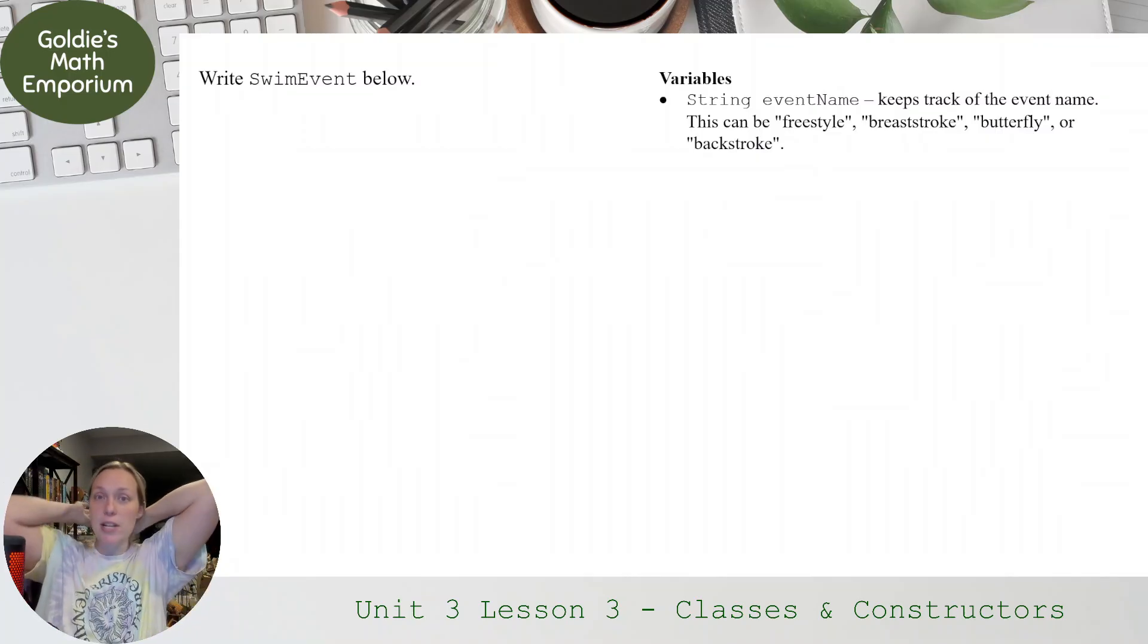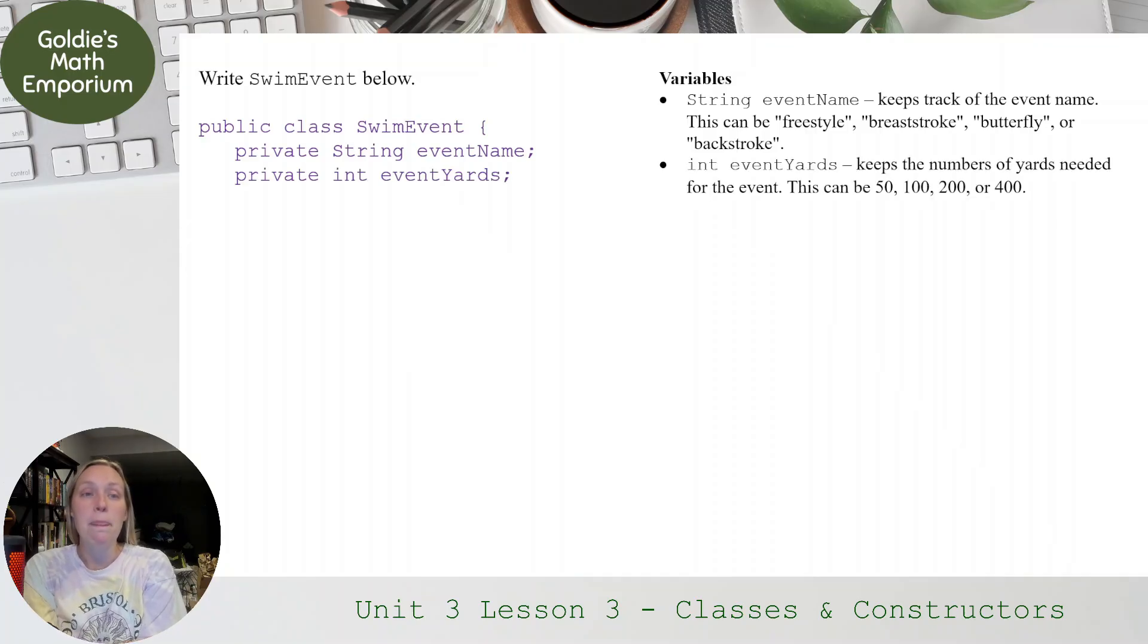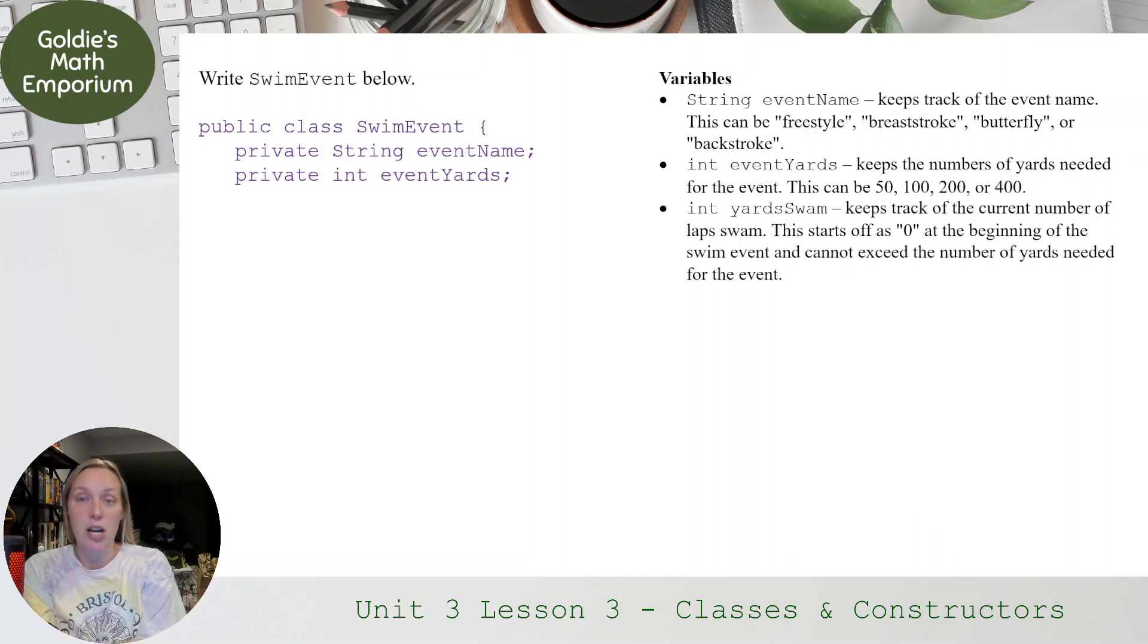So we're going to write. First, we're going to write out the variables because those are all our instance variables here. So I know I'm going to have public class SwimEvent, and I'm going to have three variables. private String eventName, private int eventYards, and private int yardsSwam. So I'm going to declare all of those at the beginning. And I'm just declaring them. They don't get any sort of values.